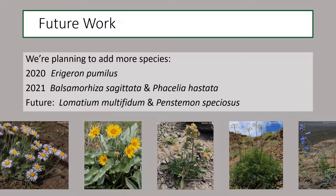Some good news is that we have been adding species to the common gardens. Last fall in 2020, we installed 39 populations of Erigeron pumilus into six gardens, and in the fall of 2021 we will be adding Balsamorhiza sagittata and Phacelia hastata. Currently these plants are being grown out for installation into the gardens. In the future, we're hoping to work with Lomatium multifidum and Penstemon speciosus in order to add some taxonomic diversity to our suite of species.